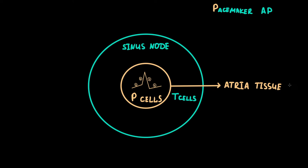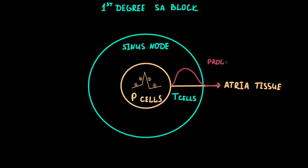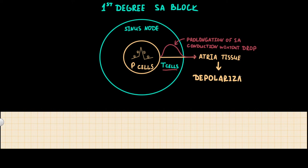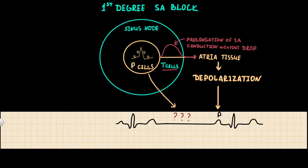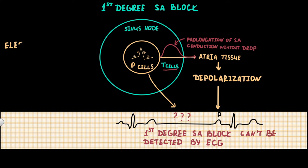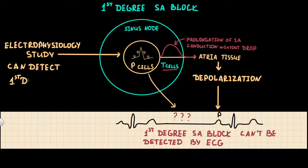The first degree of sinoatrial block is characterized by prolongation of sinoatrial conduction time through the T-cells without dropping the PQRST. When the impulse from the sinus node reaches the atria, on ECG we see it as a P-wave. But depolarization of the sinus node itself can't be detected by routine ECG due to its very low amplitude. As a result, first degree sinoatrial block also can't be detected by routine ECG. It can only be detected by electrophysiology study, where by catheterization of the heart we can record ECG directly from the sinus node, detect its depolarization as the start point, and the P-wave as the finish point, allowing us to evaluate conduction time through the T-cells.